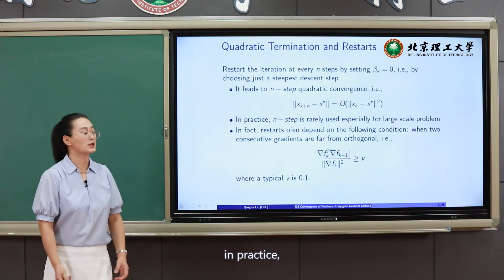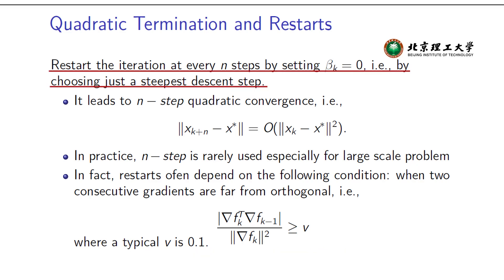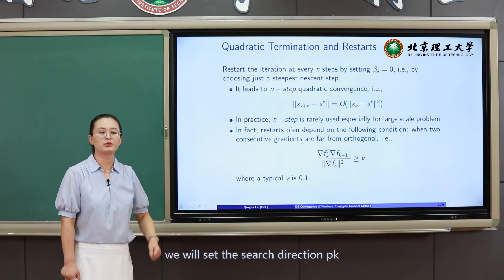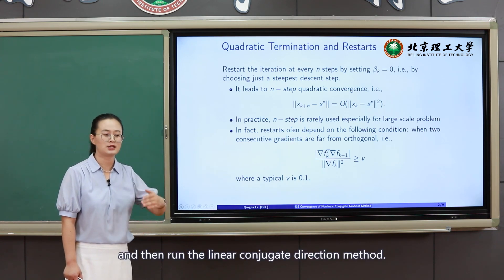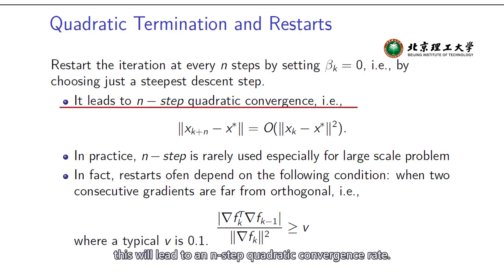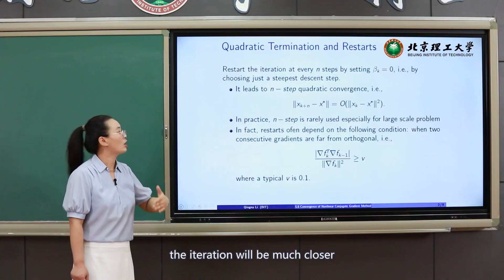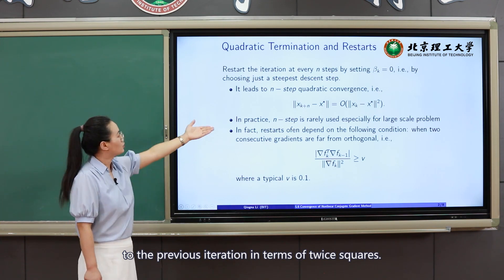In practice, we do it like this: each time we start with the steepest descent direction. After n steps, we assume that this is one round of the linear conjugate gradient method. Then we set the search direction p_k as the steepest descent direction again and run the linear conjugate direction method. We assume this leads to an n-step quadratic convergence rate — for each n-step, the iteration will be much closer to the previous iteration, in terms of twice squares.